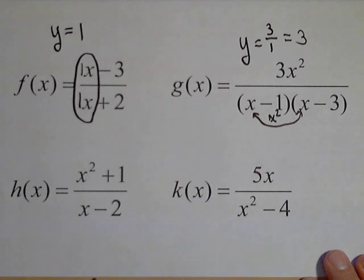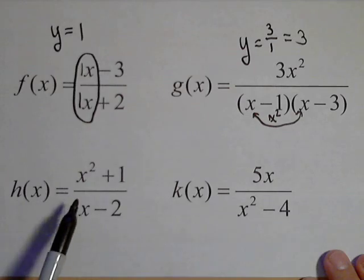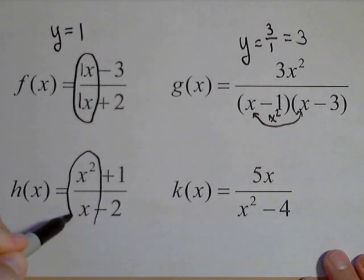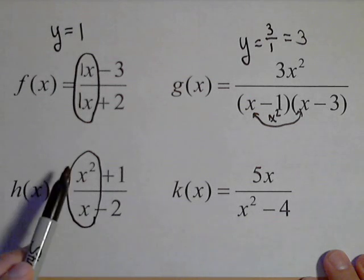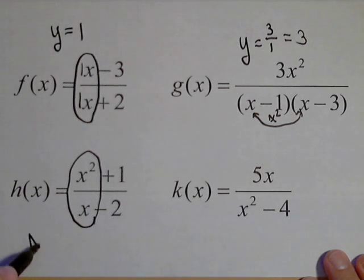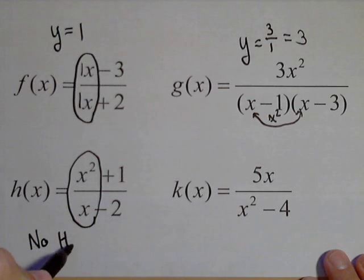H of x. Here's our leading terms. Degree is greater in the numerator. That means the top's growing faster than the bottom. No horizontal asymptote.